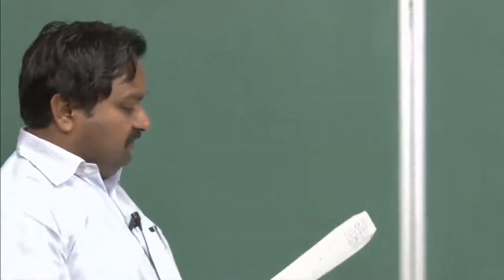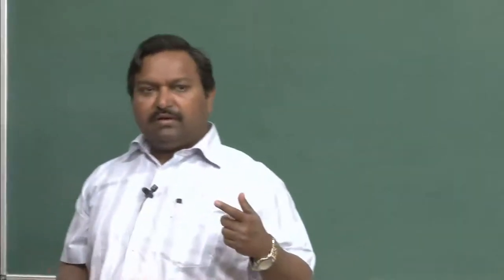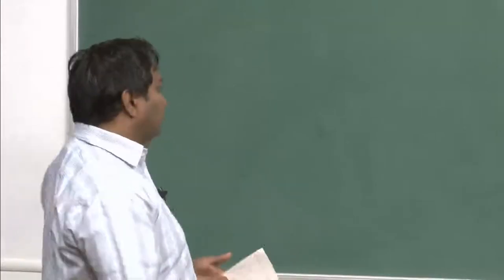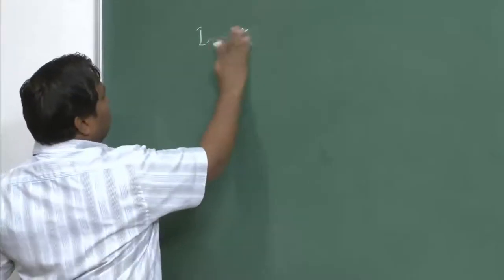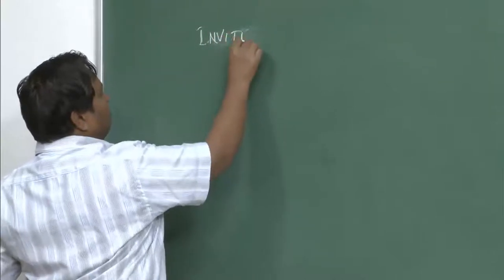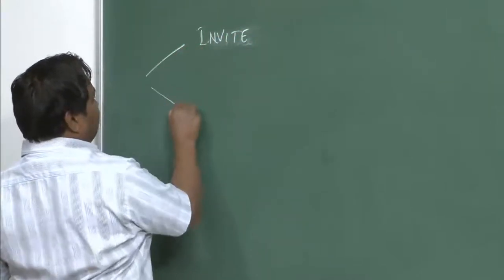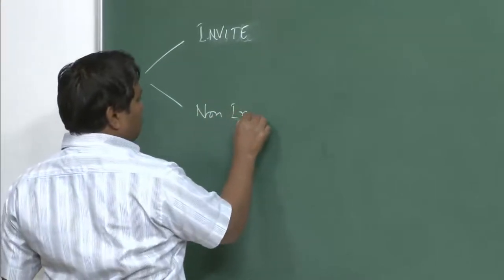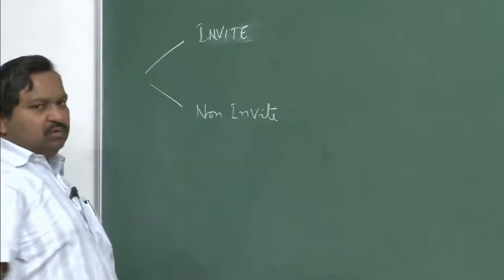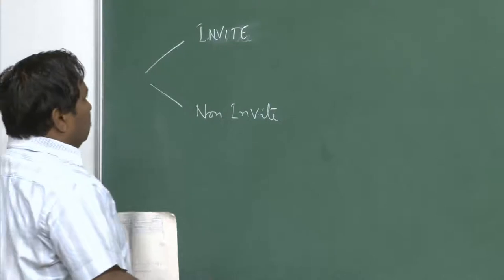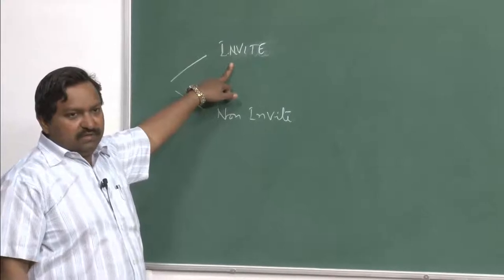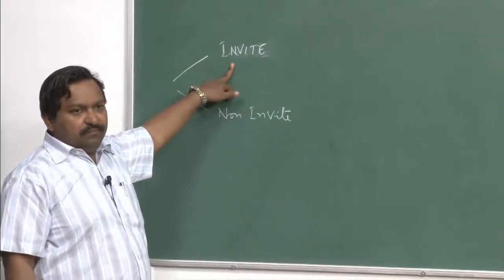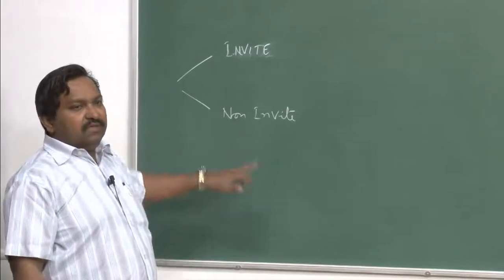What we were discussing yesterday was the SIP trapezoid and how an invite message actually works. There are only two kinds of messages in a SIP system. One is the invite; all others are categorized as a non-invite category. An acknowledgement is only sent for the invite request — there will be a request, a response, and then an acknowledgement. For non-invite requests, there is no acknowledgement; it is always a request-and-response kind of thing.